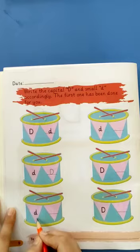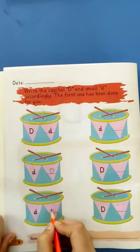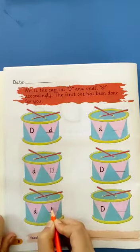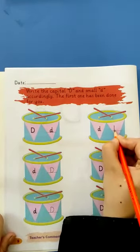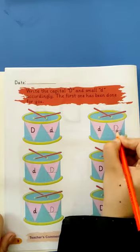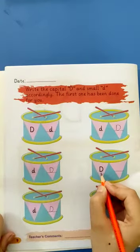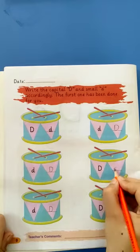And this one small d. We write capital D. This one small d. We write capital D. And this one capital D. We write small d.